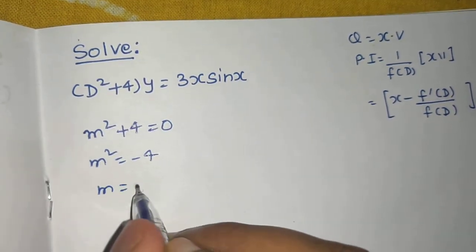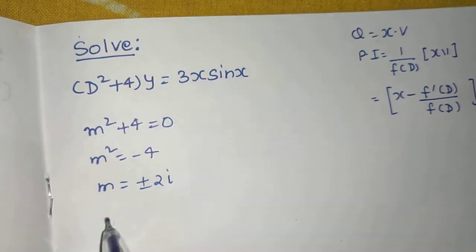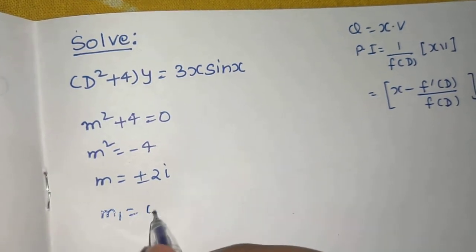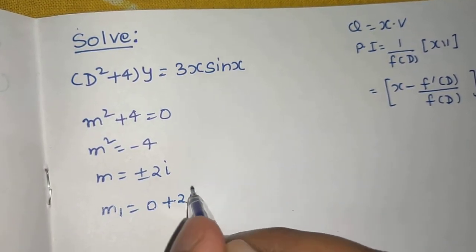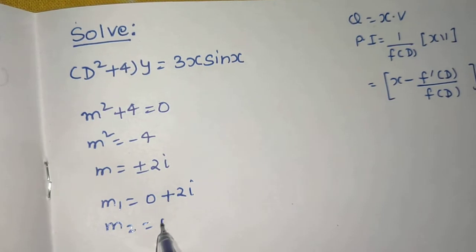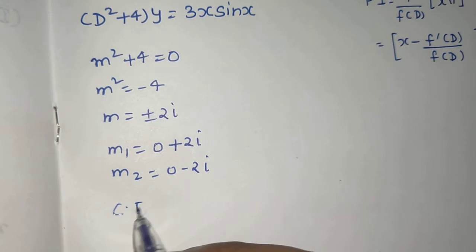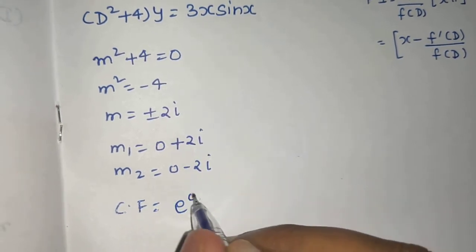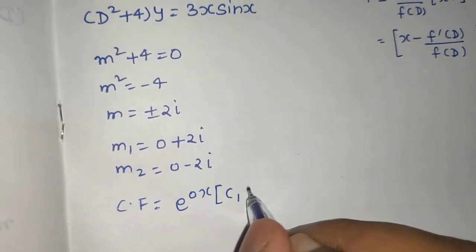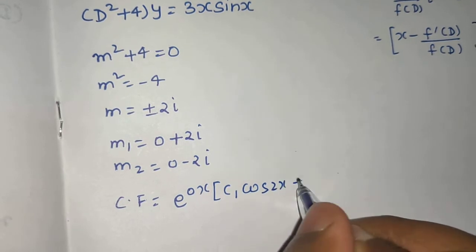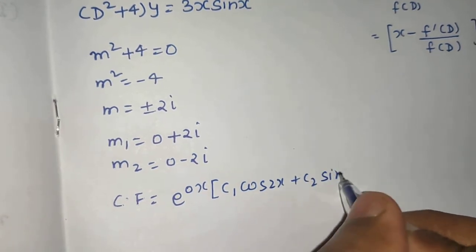m = ±2i. For your understanding I can write this as m₁ = 0 + 2i and m₂ = 0 - 2i. So a is 0, b is 2. I can write my complementary function as e^(ax)[C₁cos(bx) + C₂sin(bx)].